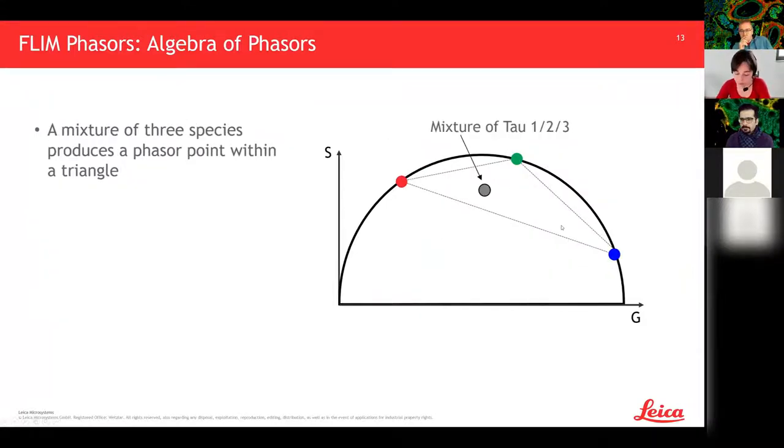This linear combination rule is also valid if you start with multi-exponential components — a point on the line between two multi-exponential species is always a fractional combination of the two, and you can determine the contributions. For a mixture of three species the point will be inside the triangle connecting all three species — valid even with three multi-exponential components.